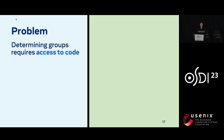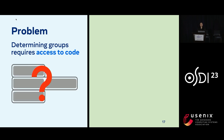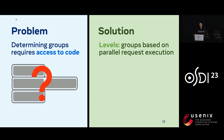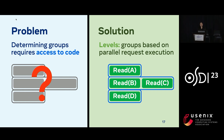Another problem is that finding these groups assumes we have access to the transaction dependency graphs, which are typically extracted via static analysis from the application code, but this information might not always be available. To address this, we develop a new grouping technique called levels, which allows us to dynamically infer groups based on parallel request execution. For example, if B and C are sent to the system in parallel, then we'll define them as a group. We compare levels with our other grouping techniques in our paper as well as their overheads.